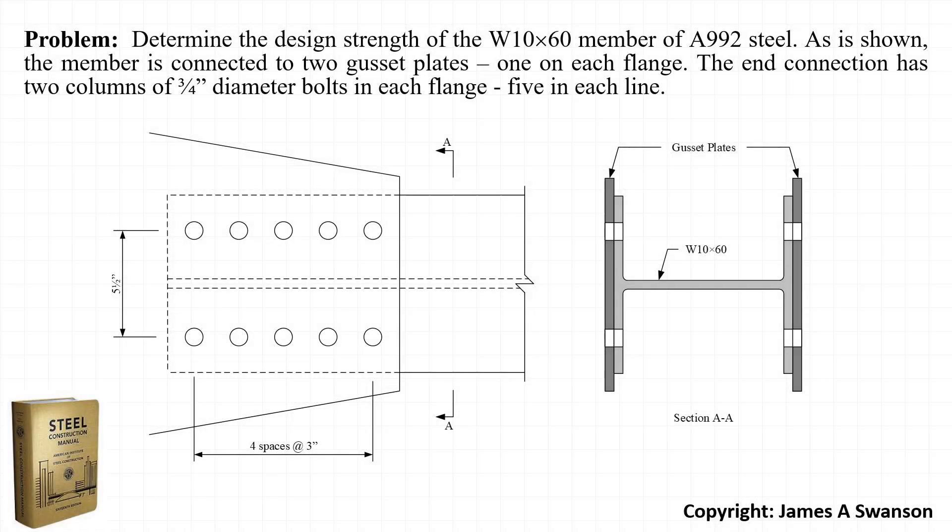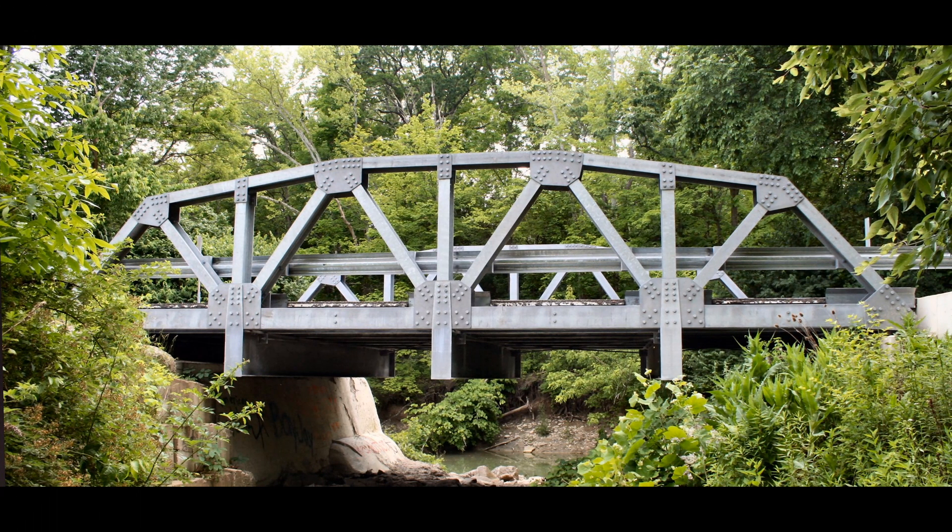In this example we're going to examine the strength of a W section used as a tension member. The problem asks us to determine the strength of a W10 by 60 made out of A992 steel. The W section is connected at its ends through two gusset plates, one on each flange, and each of the gusset plates is connected to its flange using two columns of five three-quarter inch diameter bolts.